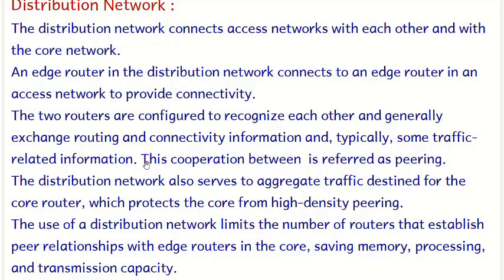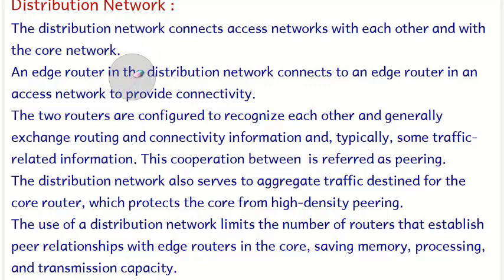An edge router in the distribution network connects to an edge router in the access network to provide connectivity. The two routers are configured to recognize each other and generally exchange routing and connectivity information through traffic-related protocols. One edge router from the access network shares routing information with the distribution network's edge router — this cooperation is called peering.